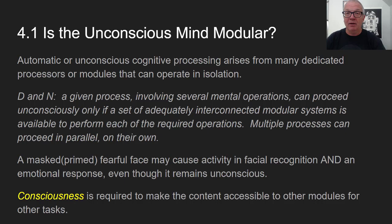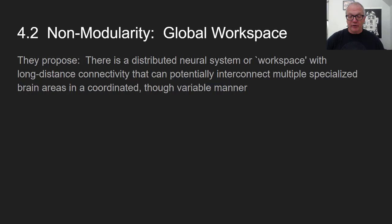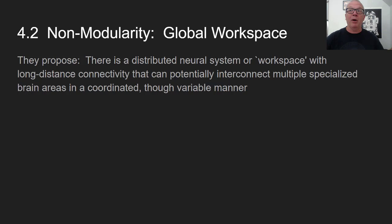Their view is non-modular. They propose a distributed neural system — a workspace with long-distance connectivity — that can potentially interconnect multiple specialized brain areas in a coordinated though variable manner. There are transverse long-distance neurons that physically connect different distant regions of the brain. When you reach a certain high level of activation such that low-level discriminators are sharing their content via these long-distance neurons, those neural discriminations get shared to all the other subsystems.